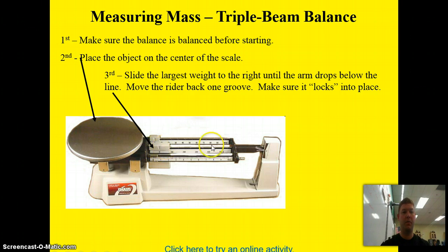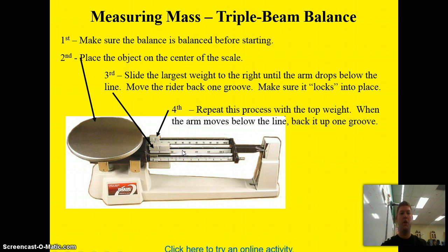Then, you move the rider back one groove. Make sure it locks into place into the notches. Fourth, you repeat this process with the top weight. When the arm moves below the line, again, you back it up one groove.